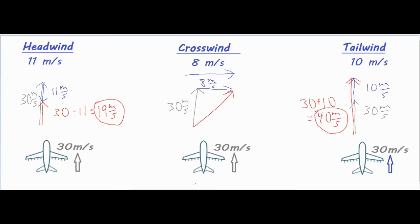For the crosswind problem it's going to be a little bit more difficult. We need to use the Pythagorean theorem, which is a² + b² = c², where c is always the hypotenuse of the right triangle. I'm going to call this V because that is our final resultant velocity, and then I can go ahead and use the Pythagorean theorem to solve for the final velocity.